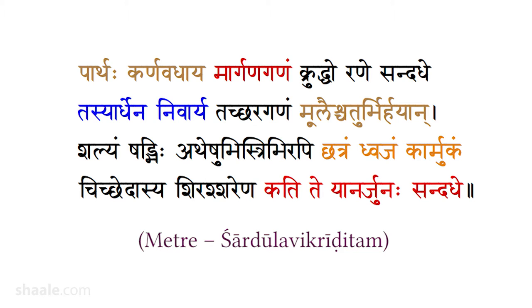This is a very beautiful verse composed in Shardulavi Kreetita. 'Parthakarnavadhaya Marganaganam' — Parthaha refers to Arjuna; Karnavadhaya means in order to slay Karna; Marganaganam — Gana means group, and Margana is the word used to refer to arrows. There are various other terms like Bana and Shara, but he has specifically chosen this word for alliteration. Margana is basically that which traces the direction — you shoot an arrow in order to hit a particular object, so it must go along a direction. Thus, a group of arrows were shot by Arjuna.